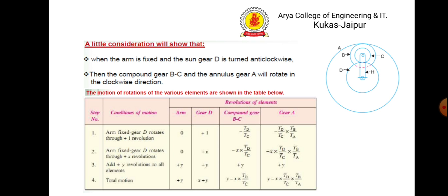Now, how to prepare the table. Suppose the arm is fixed and sun gear d is turned anti-clockwise. Then compound gear bc and annular gear a rotate in the clockwise direction. Row 1: arm fixed, gear d rotates through +1 revolution — arm = 0, gear d = +1, compound gear bc = −t_d / t_c (negative because clockwise), gear a = −(t_d / t_c) × (t_b / t_a). For row 2, multiply all by x. For row 3, add +y to all. Row 4 is the total sum of rows 2 and 3.